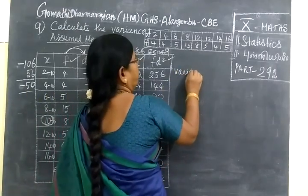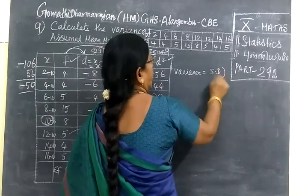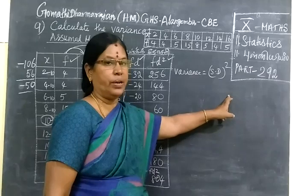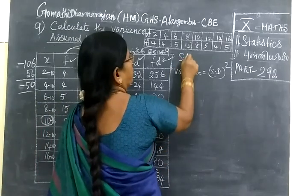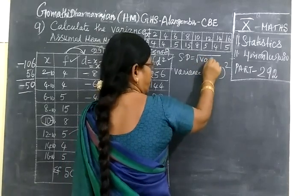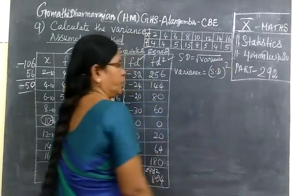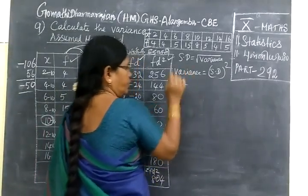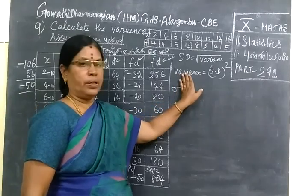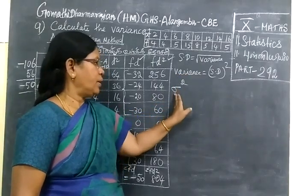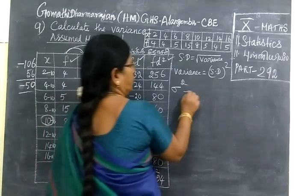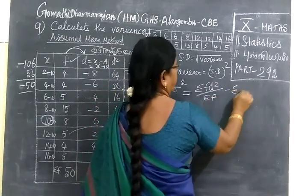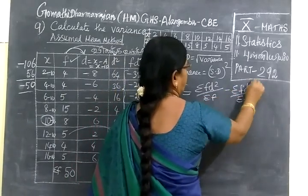Now, variance equals standard deviation squared. Standard deviation is square root of variance. Variance equals standard deviation squared. So standard deviation squared equals, what is the formula? Sigma FD square by sigma f minus sigma FD by sigma f whole square.